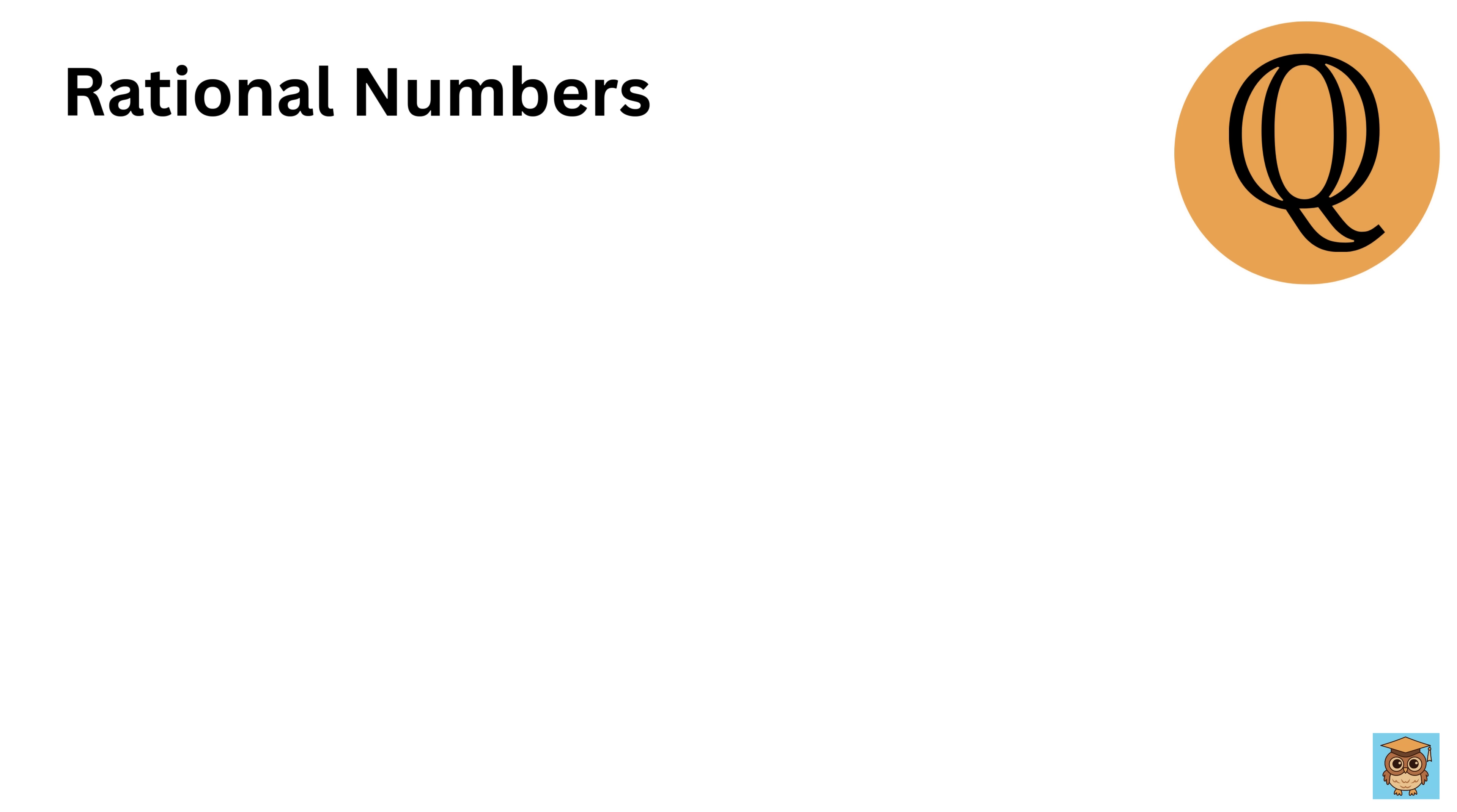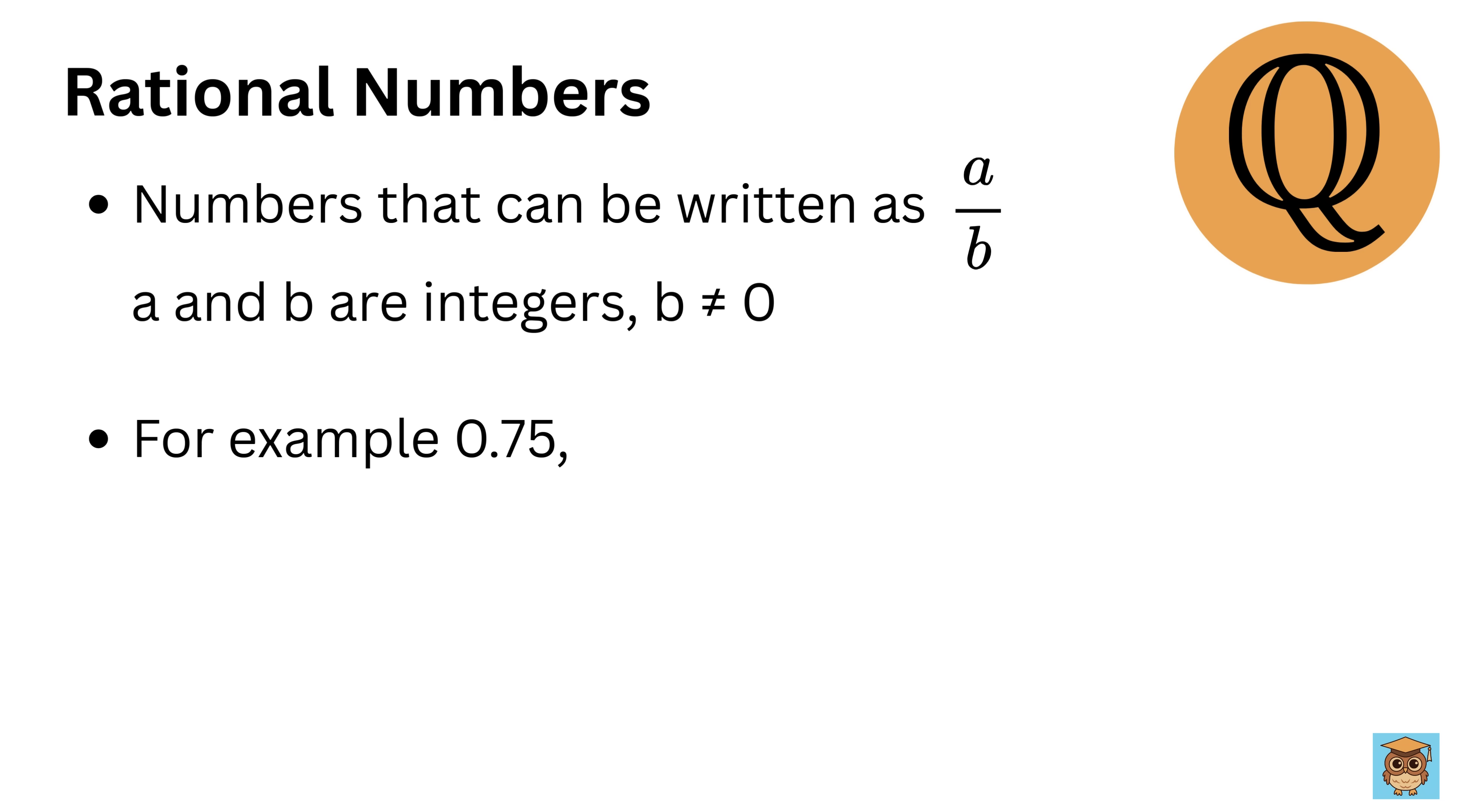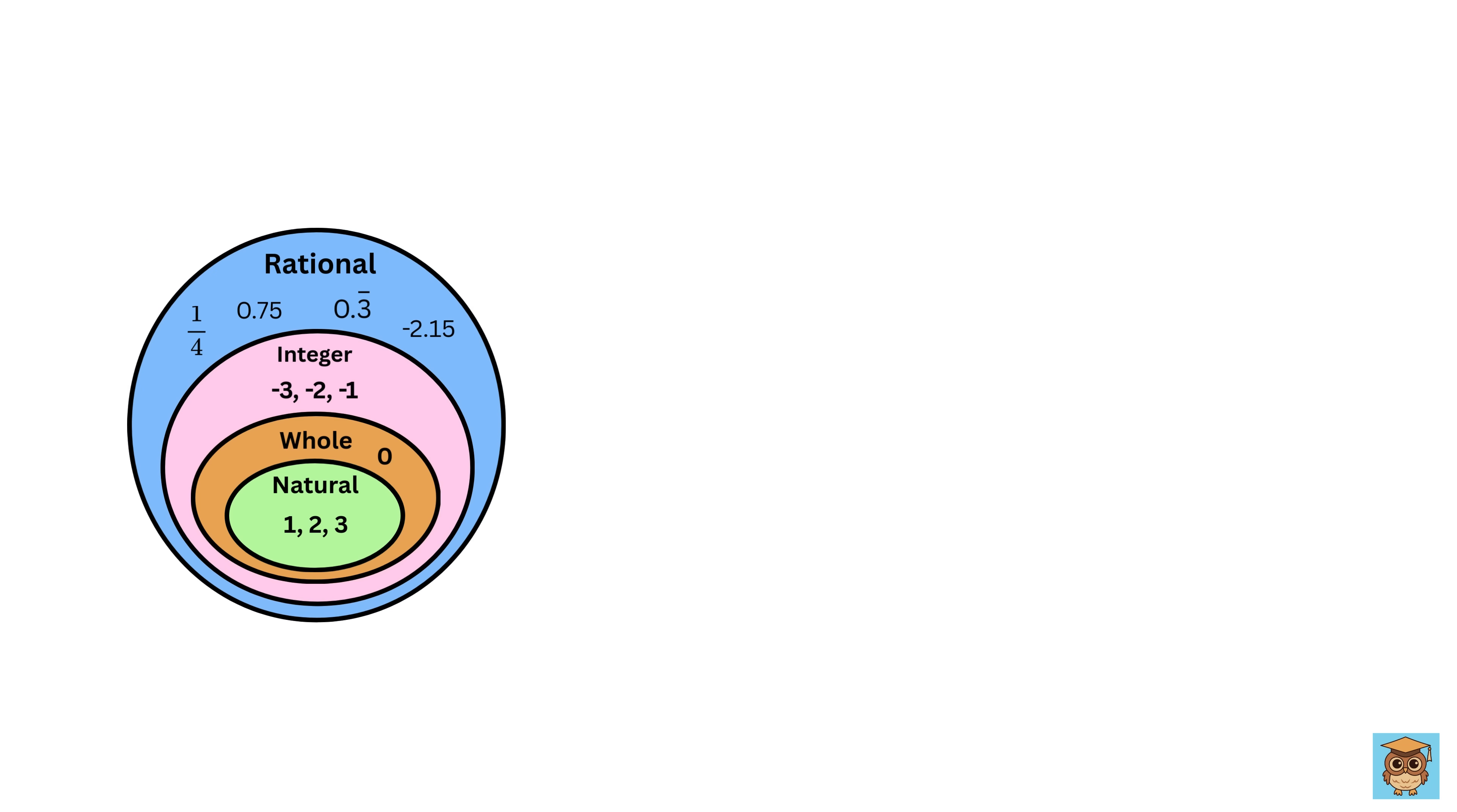Rational numbers are any numbers that can be written as a fraction A divided by B, where both A and B are integers, and B is not equal to 0. Rational numbers include terminating decimals like 0.75, one-fourth, and repeating decimals like 0.3 repeating. All integers are also rational numbers since any integer can be written with a denominator 1.